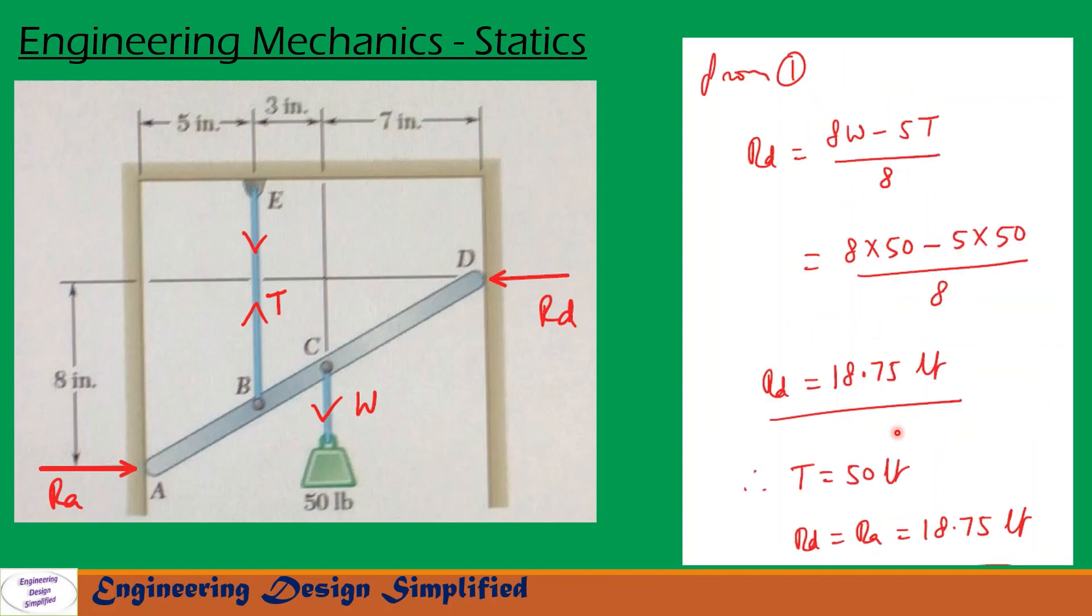Now the answers are T equal to 50 lb, that is tension in this cable BE equal to 50 lb. And since RD equal to RA, RD we have calculated here RD equal to 18.75 lb. So RD equal to RA equal to 18.75 lb.